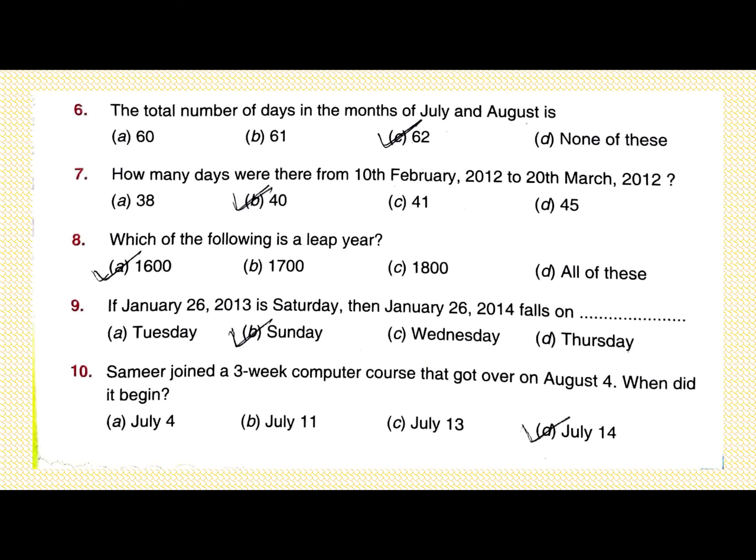Question number 7: how many days were there from 10th February 2012 to 20th March 2012? The first 9 days of February will not be taken. This is a leap year, so 29 days in February. 29 minus 9 equals 20 days of February, plus 20 days of March, giving 40 days in all. Part B is correct.